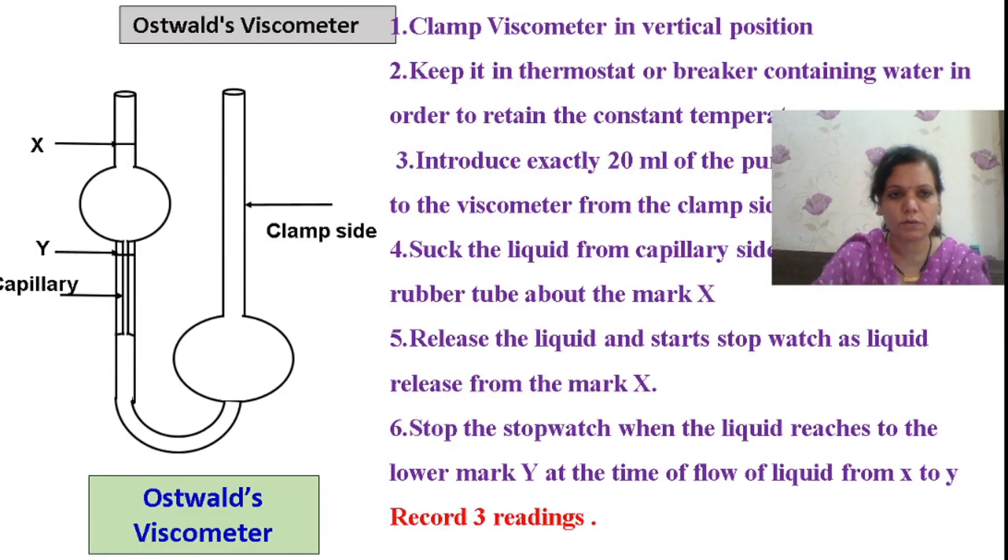We are going to utilize the Ostwald's viscometer. It is a glass assembly. We clamp this in a vertical position and keep it in a thermostat or beaker containing water to measure viscosity under constant temperature. We pour 20 ml of the solution from the clamp side. We utilize a rubber bulb to apply pressure and this liquid will move up till here, and the time of flow between markings X and Y we measure in seconds. We take three readings and use the mean for our calculation.